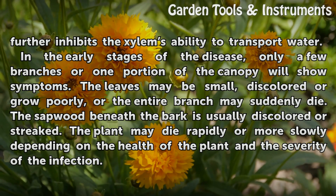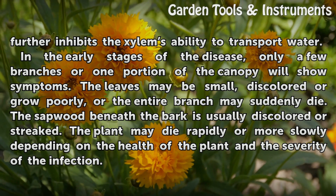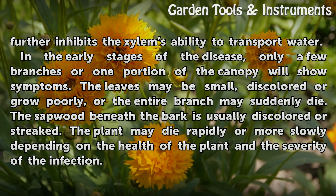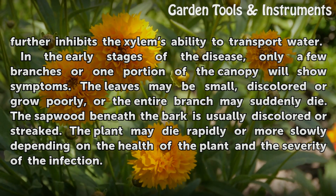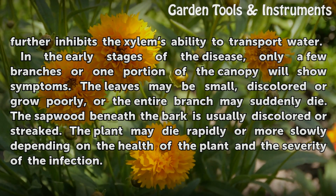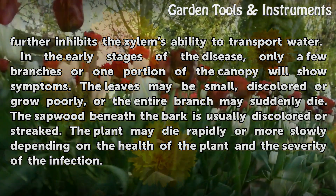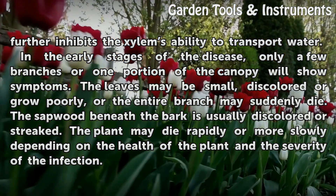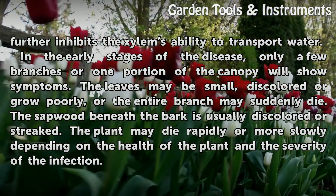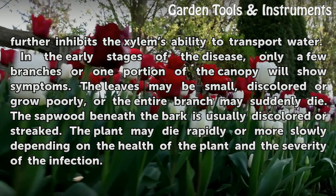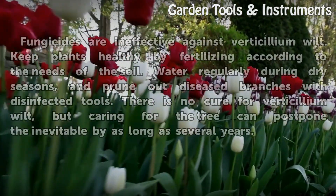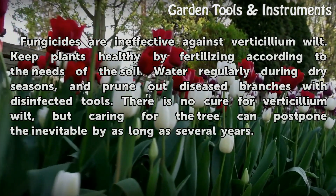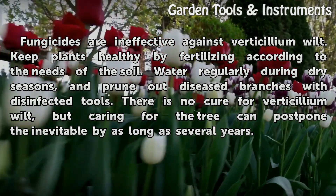In the early stages of the disease, only a few branches or one portion of the canopy will show symptoms. The leaves may be small, discolored, or grow poorly, or the entire branch may suddenly die. The sapwood beneath the bark is usually discolored or streaked. The plant may die rapidly or more slowly depending on the health of the plant and the severity of the infection. Fungicides are ineffective against Verticillium wilt.